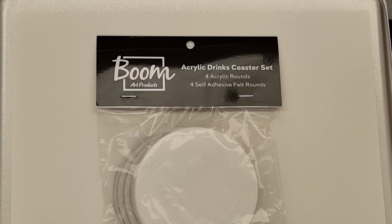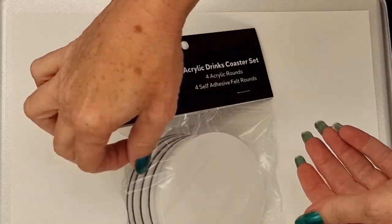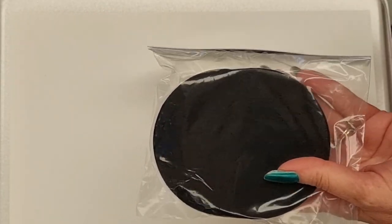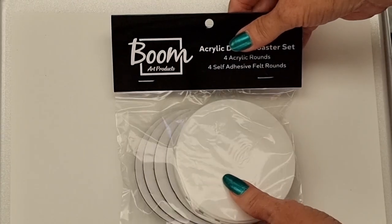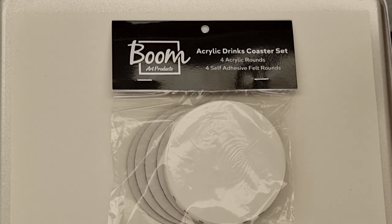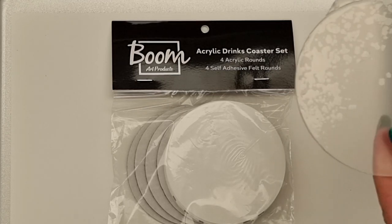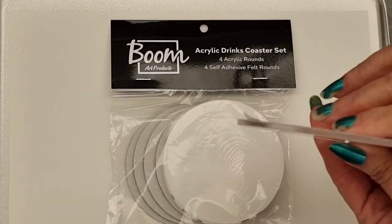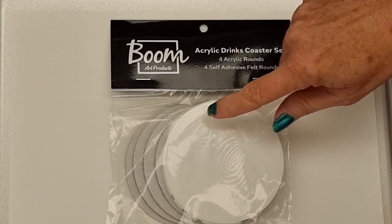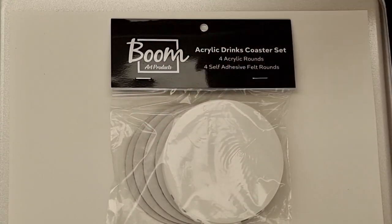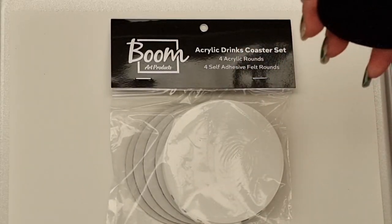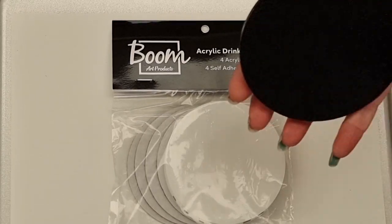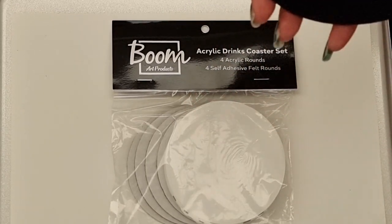It comes in a set, so you get four acrylic rounds and the felt backings. They've already got the self-adhesive sticker in place or lining. The acrylic discs come with a coating on either side, and the felt rounds come with a protective coating in place. Once you peel that off, the adhesive is exposed, so you don't touch any of that until you're ready to go and attach it.